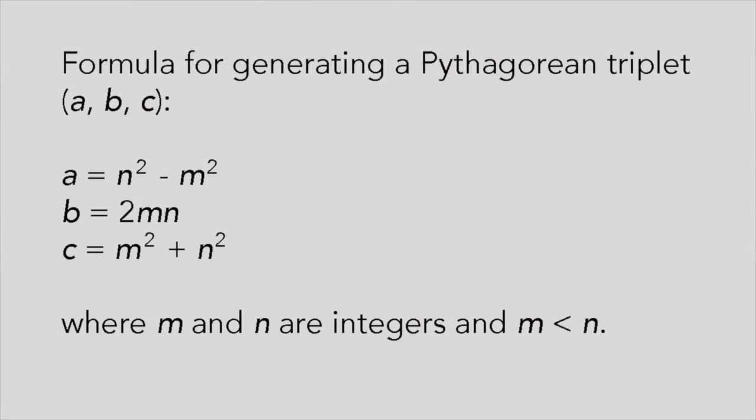If the numbers in the triplet are A, B, and C, then A equals N squared minus M squared, B equals 2MN, and C equals M squared plus N squared, where M and N are two integers, and M is less than N.